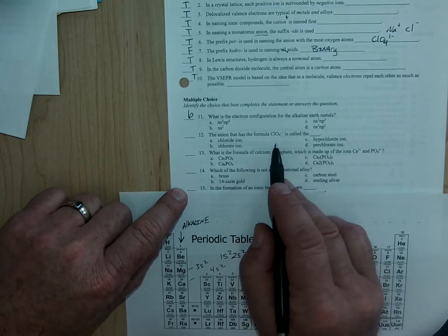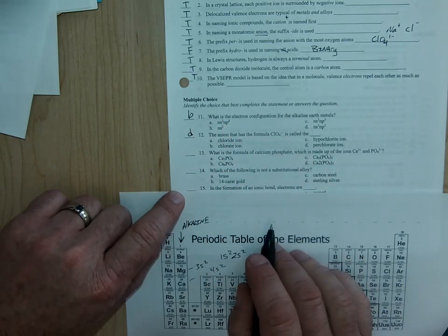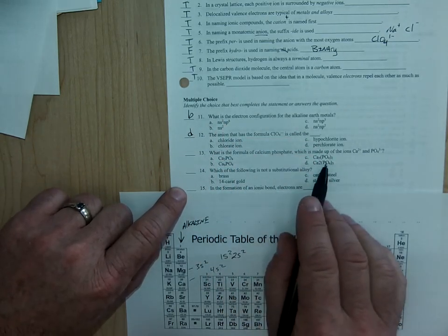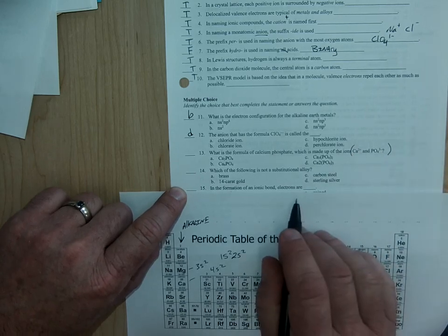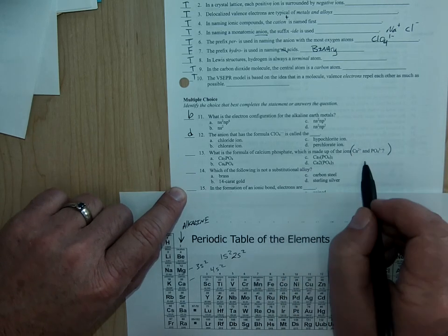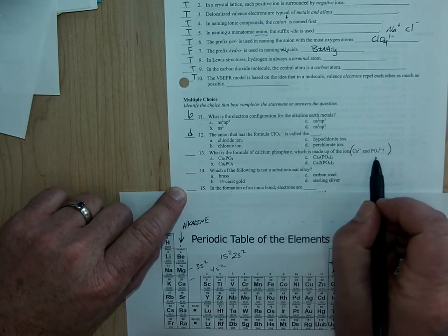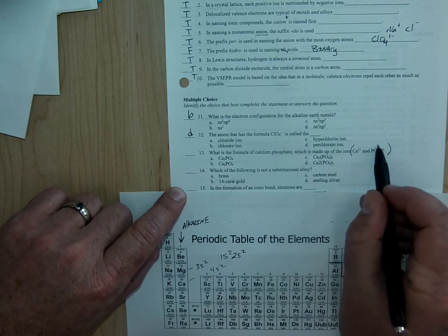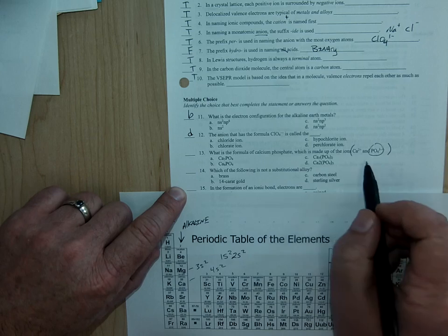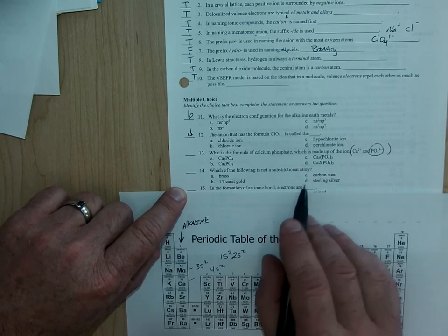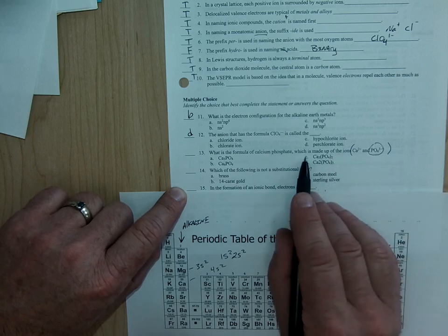ClO4 minus is the perchlorate ion. So that's D. The formula for calcium phosphate, and they were nice with this. They tell you right here what the ion is, what the charges are. And so the 3 is going to go with the calcium, the 2 is going to go with the phosphate, and because the phosphate is polyatomic, you need to put it in parentheses and put the 2 with it. So the one that is in parentheses and has a 2 with the phosphate and a 3 with the calcium is C.